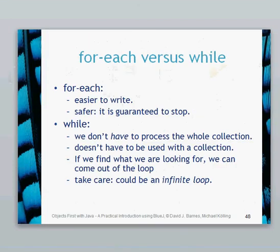Comparing for-each and while: the for-each is probably easier to understand and more straightforward — you're just searching a collection, and one of the main things is it's guaranteed to stop. A while loop is good because we don't have to process the whole collection, and it doesn't specifically have to be used with a collection. You can use while loops for many other things, like counting numbers. One of the benefits is you can stop searching when you've found something. But one of the main problems is the infinite loop — for example, while index is greater than zero, just keep incrementing — that will carry on forever.